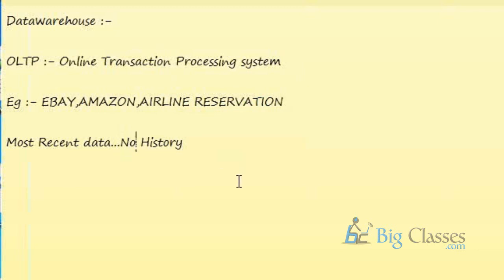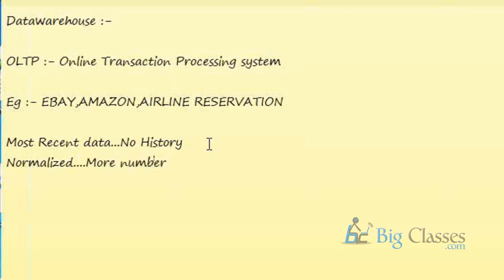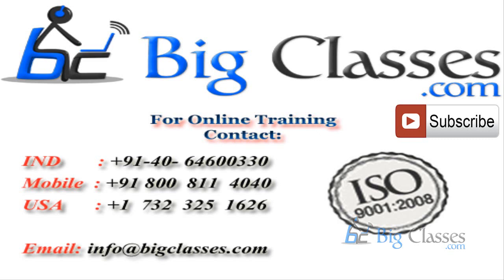Historical information is essential for business users to analyze data, but OLTP systems do not contain historical data. Other characteristics of OLTP systems include that data is in a normalized structure. Normalization simply means distribution of data into many different tables — meaning more tables are present. These OLTP systems cannot be used for reporting because of certain disadvantages.